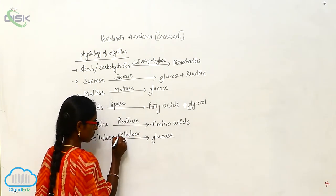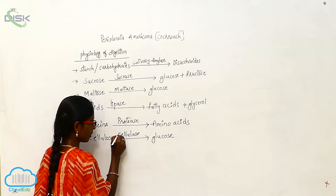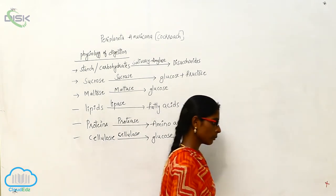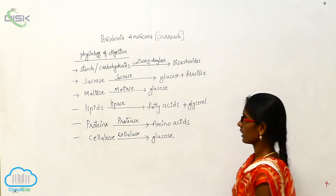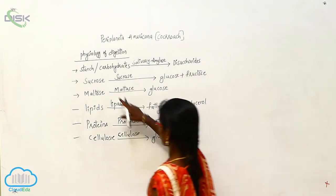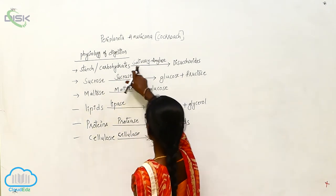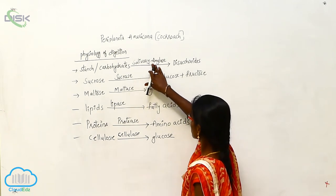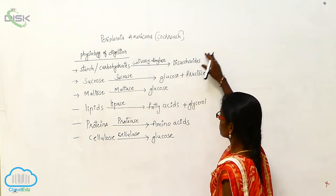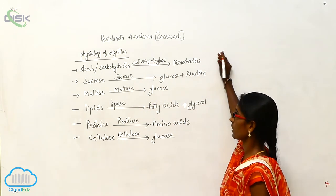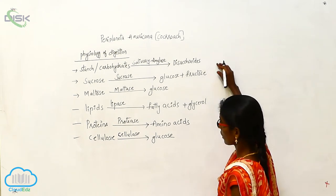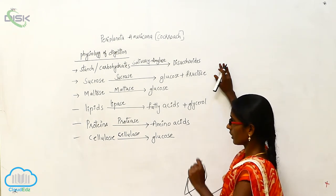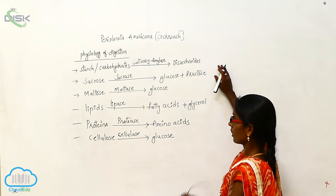This is the physiology of digestion. In the crop wall, the food material undergoes partial digestion — that is, starch or carbohydrates are digested in the presence of amylase and converted into disaccharides. That disaccharide then enters the gizzard, and after that it will go to the mesenterone.